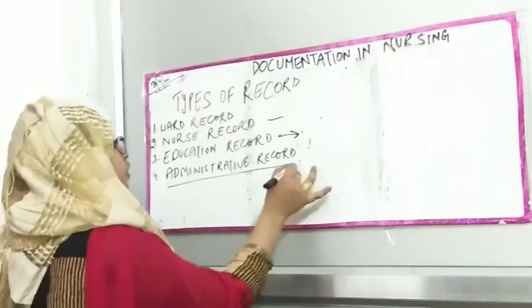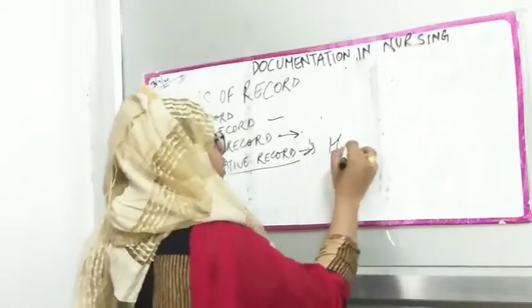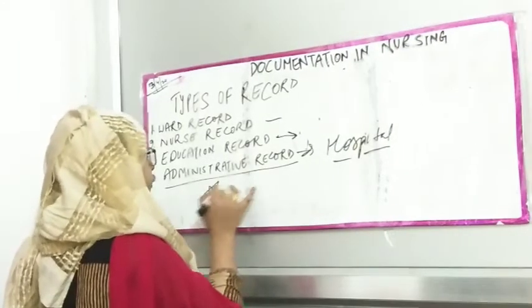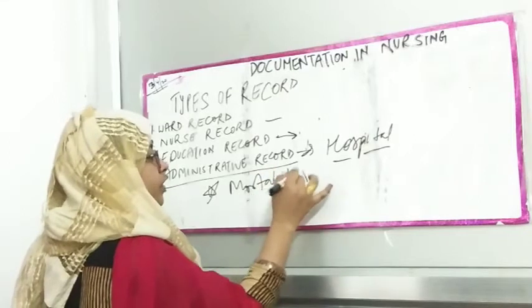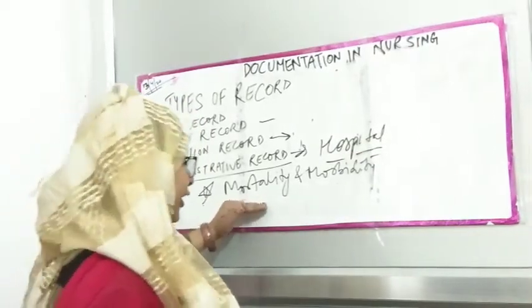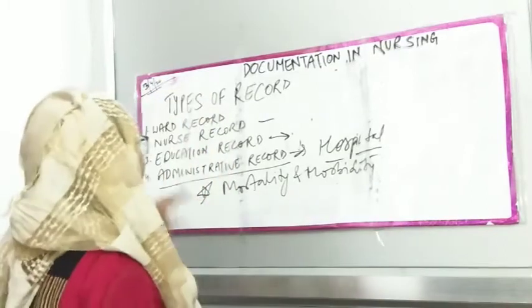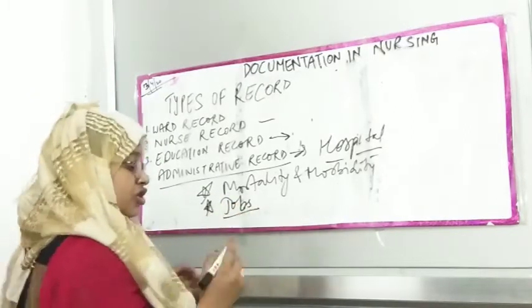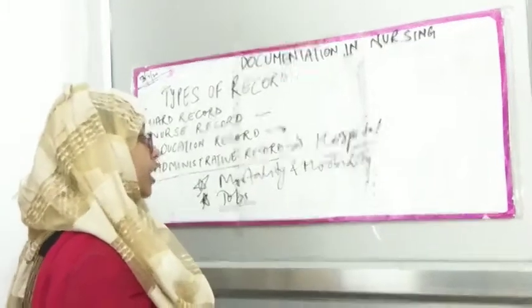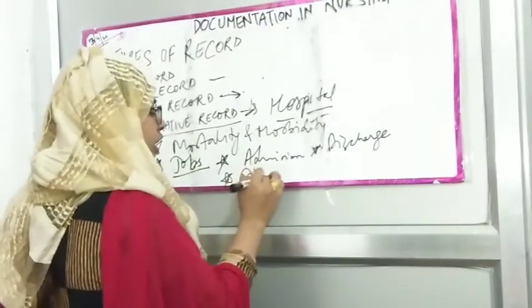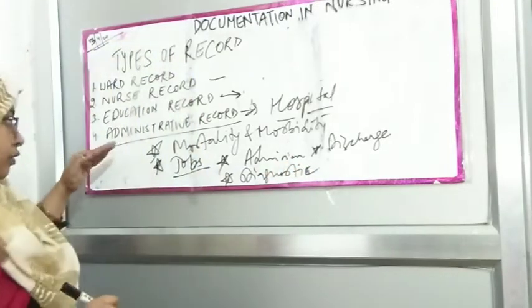Next are administrative records, which are used by hospitals for statistics such as mortality and morbidity. Administrative records also include monthly records — for example, how many patients were admitted each day, how many were discharged, and how many were transferred. These records help with administrative reporting.